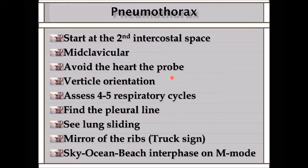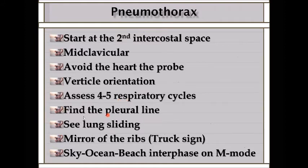To diagnose pneumothorax by ultrasound, start at the second intercostal space at the mid-clavicular area. If on the left side, avoid the heart. Always hold the probe vertical to the ribs, wait for 4 to 5 respiratory cycles, and look at the pleural line. Then assess sliding and look for the mirror image of the ribs (track sign). We will also look at the sky-ocean-beach interface on M-mode to diagnose pneumothorax.